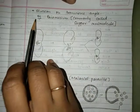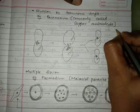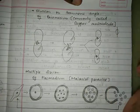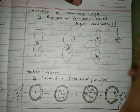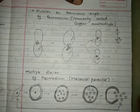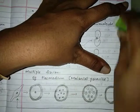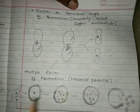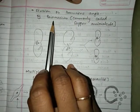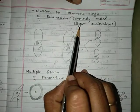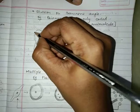The next is binary fission where division is on the transverse angle, which is seen in an organism called Paramecium, commonly called the slipper animal because of its shape. Paramecium has many cilia — hair-like outgrowths on its surface — and it has two nuclei.